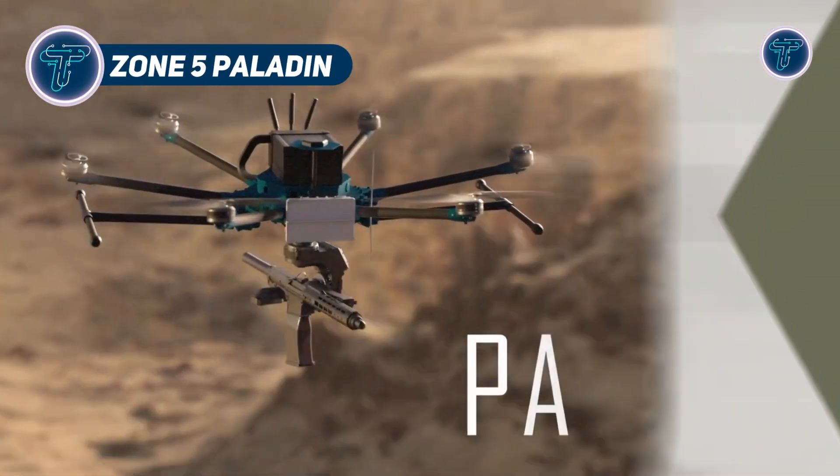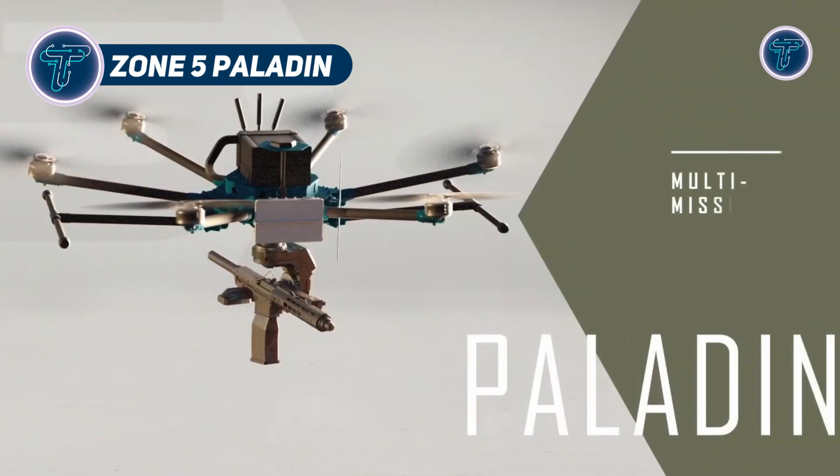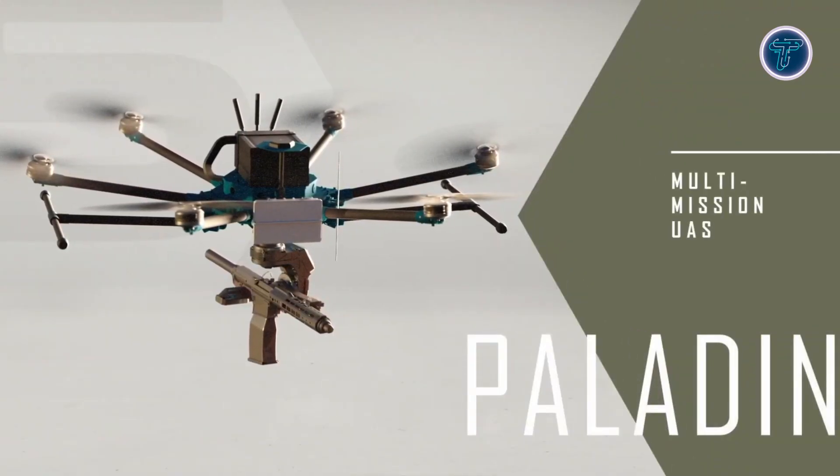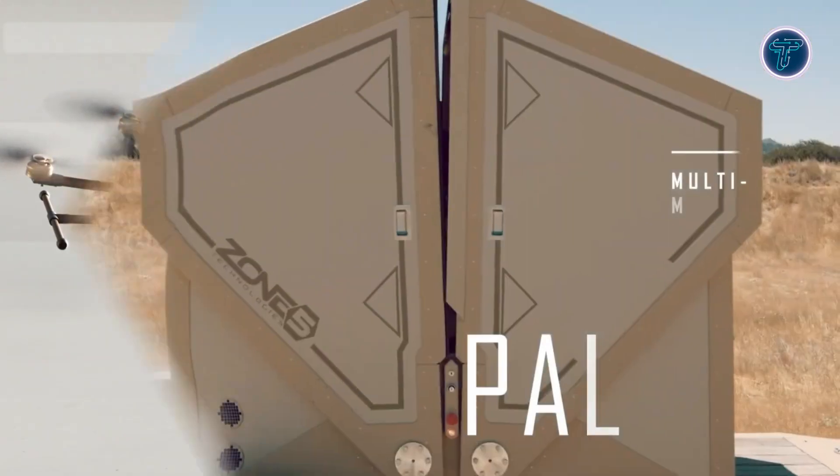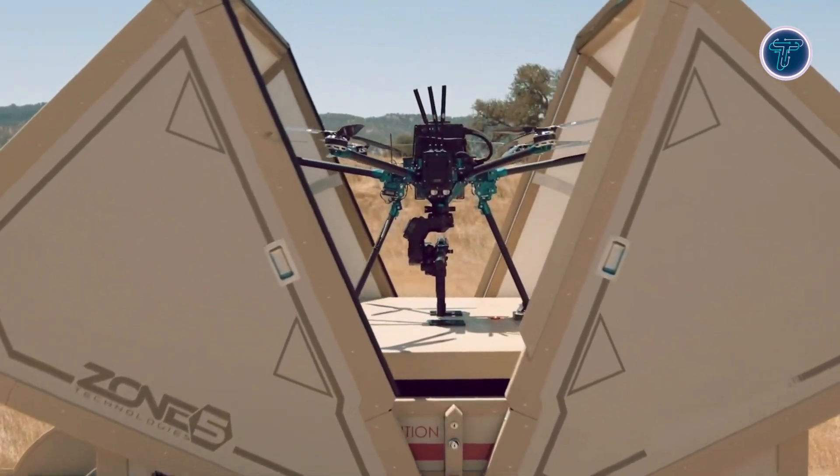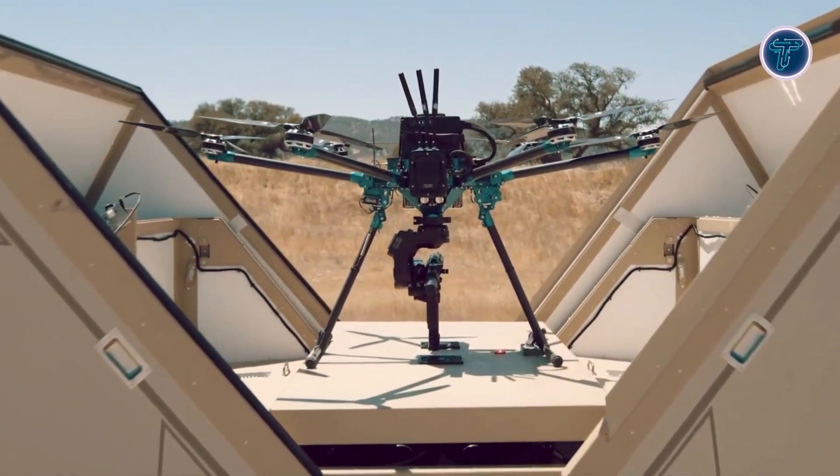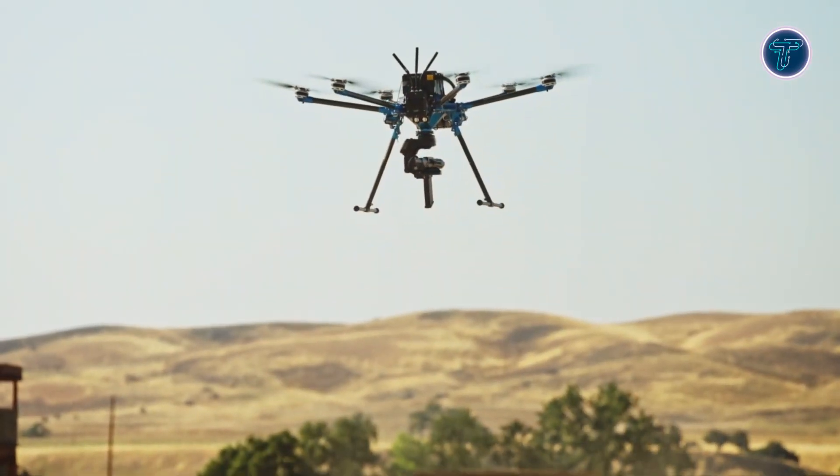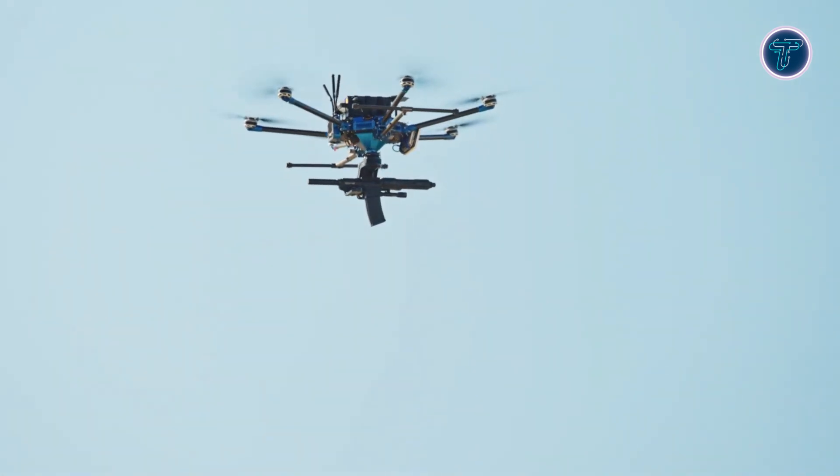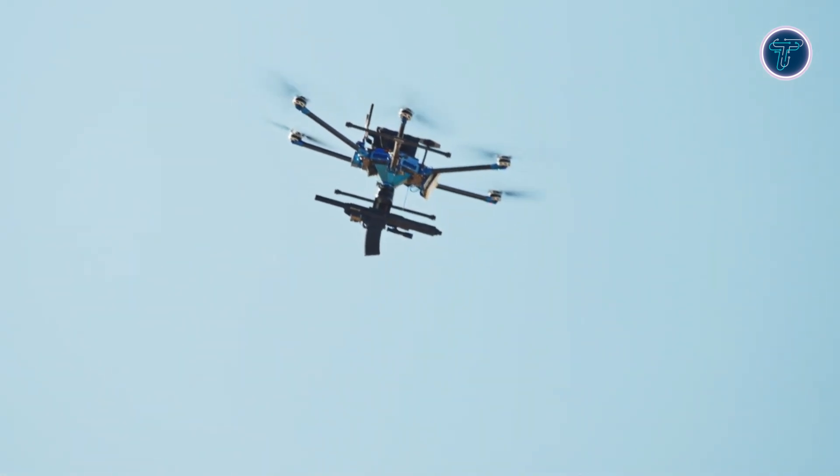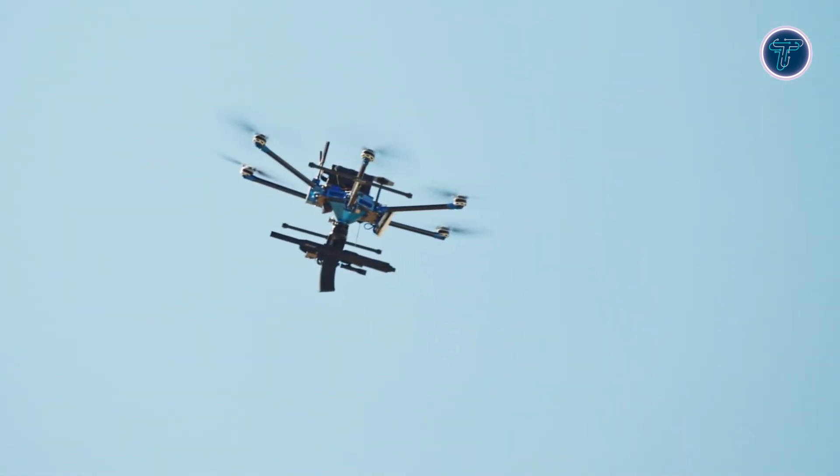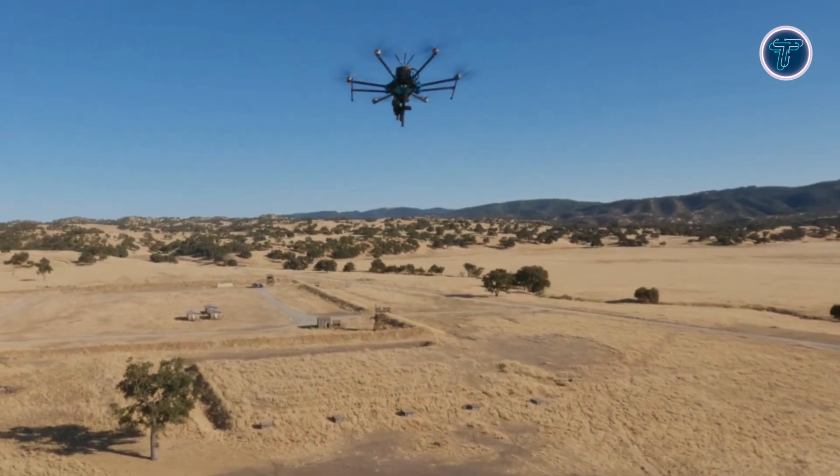Zone 5 Paladin. The Zone 5 Paladin is a highly versatile autonomous drone designed to operate alongside manned aircraft or independently. Its modular architecture allows quick swapping of payloads, enabling it to perform counter-drone missions, deliver small munitions, or even carry rifle fire. Beyond combat, Paladin can support non-lethal operations with loudspeakers or spotlights for communication and crowd management.